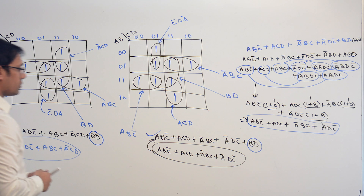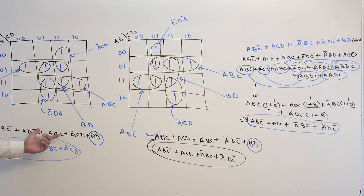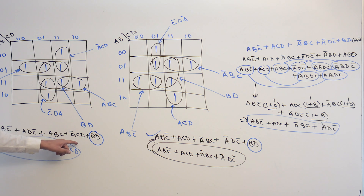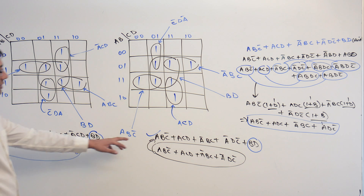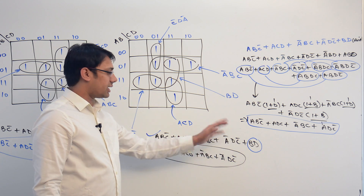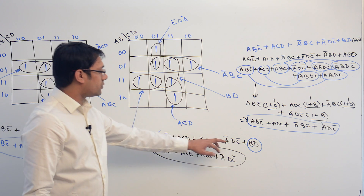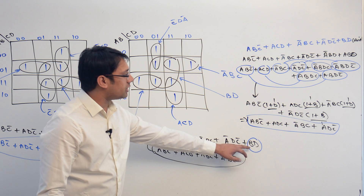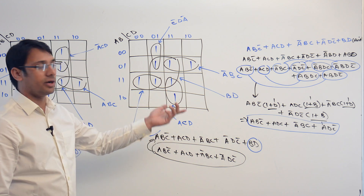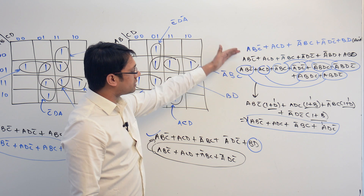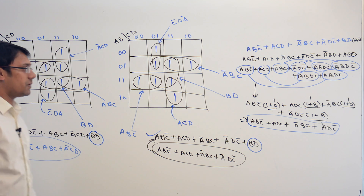From this K-map, we are getting the equation where we have BD. We think that this equation may be minimized, but I have just proven that BD is just redundant. We can even minimize BD and further minimize the expression.